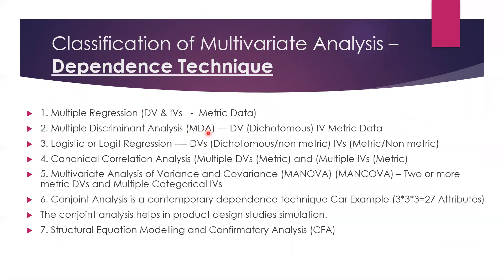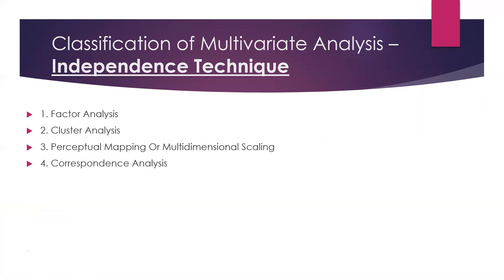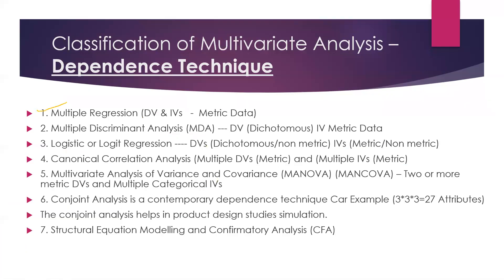We can call it logistic or logistic regression — it depends upon which particular technique we are working on. For multiple regression, the most important thing is that the dependent variable and independent variables must be metric data, meaning continuous variables — numbers, not categorical variables. Categorical variable means, for example, male coded as one and female coded as two.